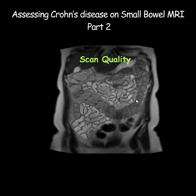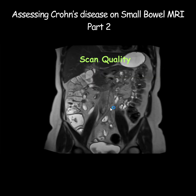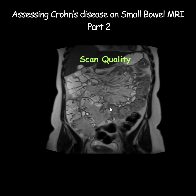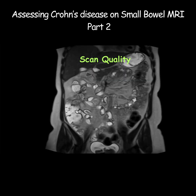You can see on this imaging that the small bowel loops are adequately distended for optimum image interpretation. So once I'm satisfied with the image quality, I would begin at the ileocecal junction to orient myself. In most patients, you will find the ileocecal junction in the right iliac fossa.